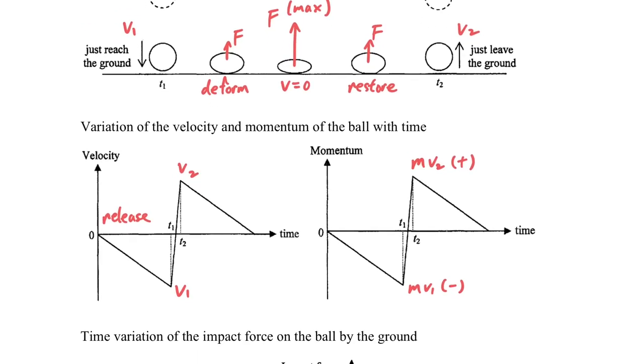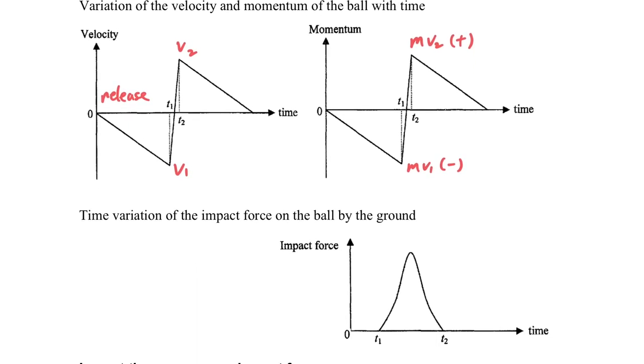So we will have two different momentums here. If we put the impact force against the time, we will observe the graph in this way. It's like the hill shape of the graph.